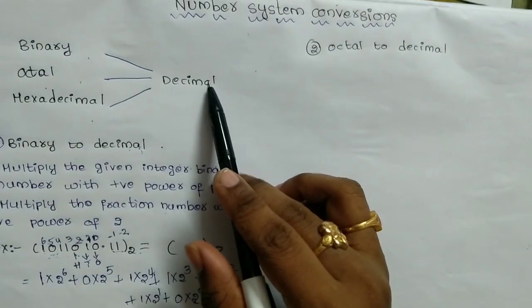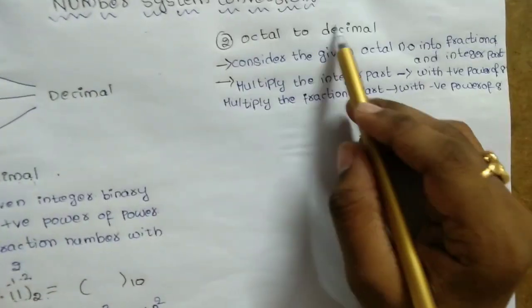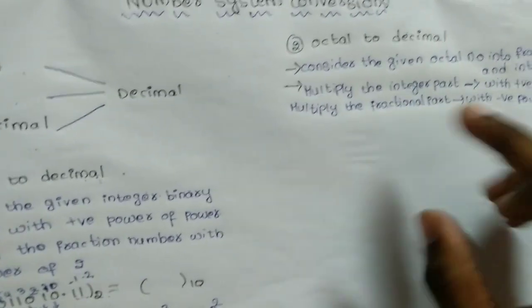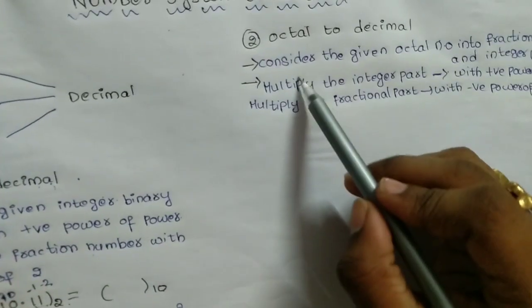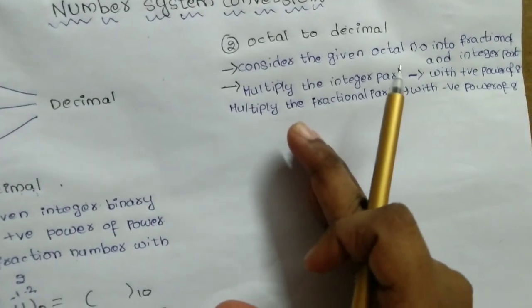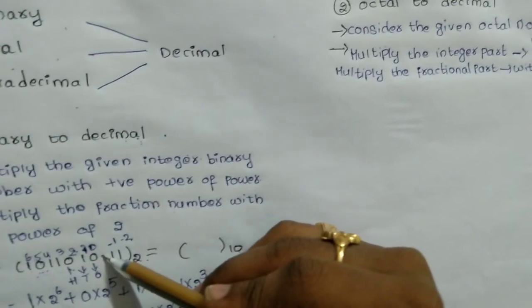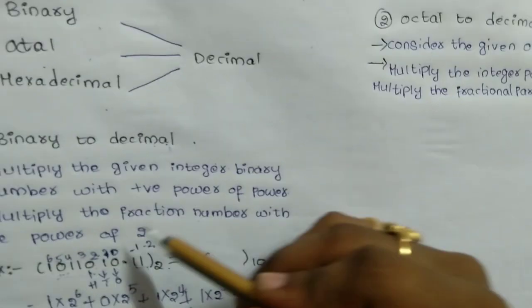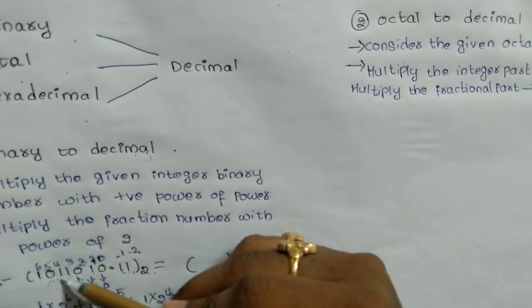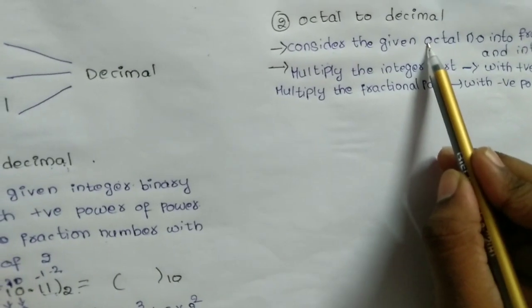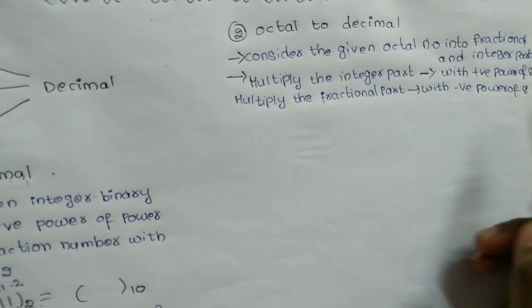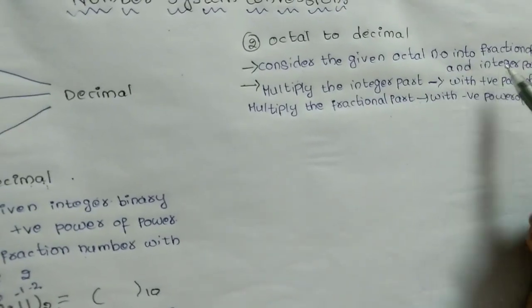The second one is octal to decimal. For binary to decimal we multiply with positive and negative powers of 2. Similarly, for octal to decimal, we multiply the integer part with the positive power of 8, and the fractional part with the negative power of 8.